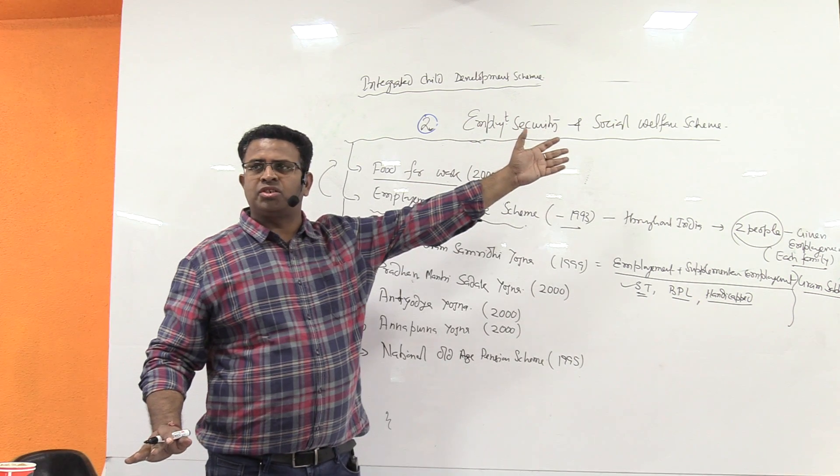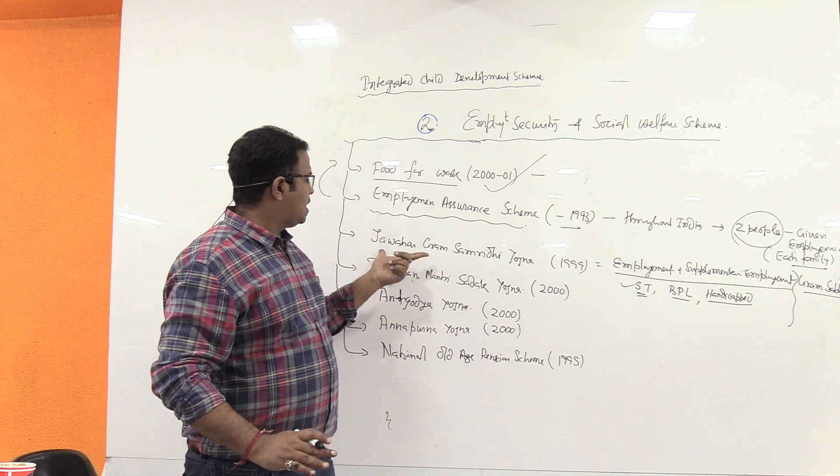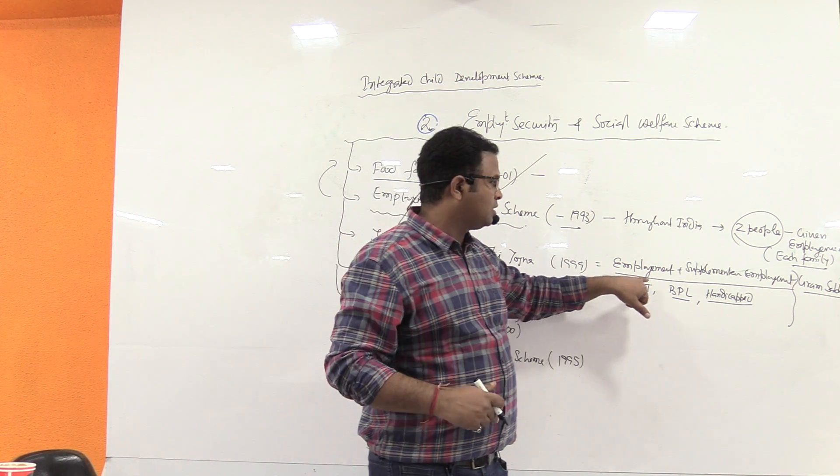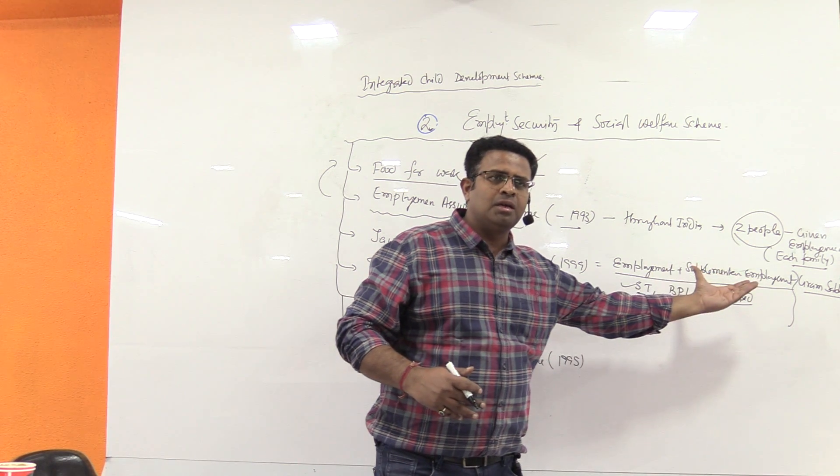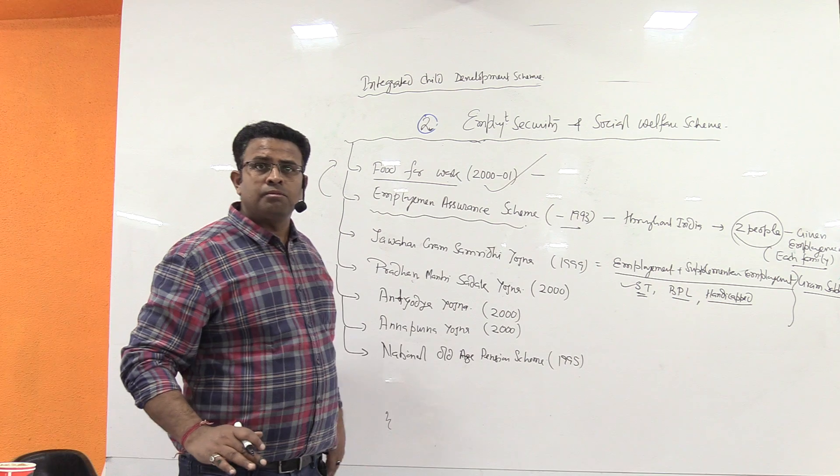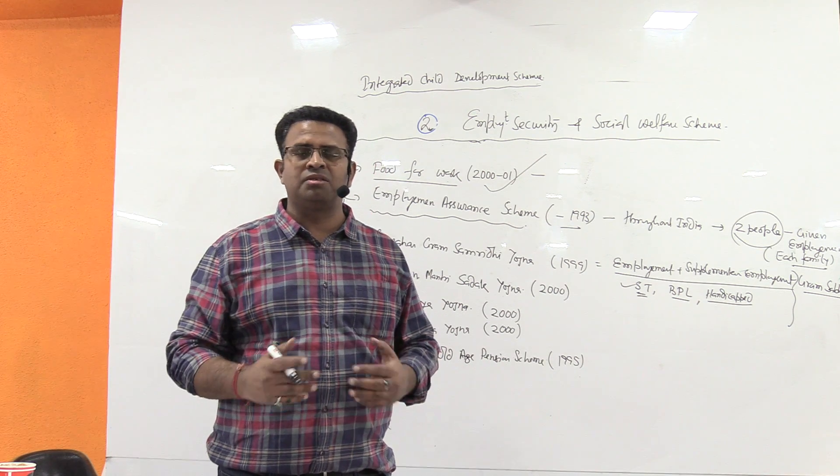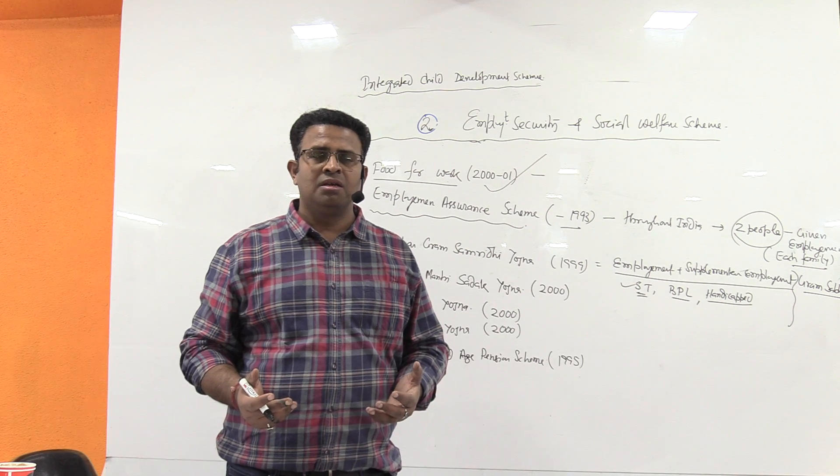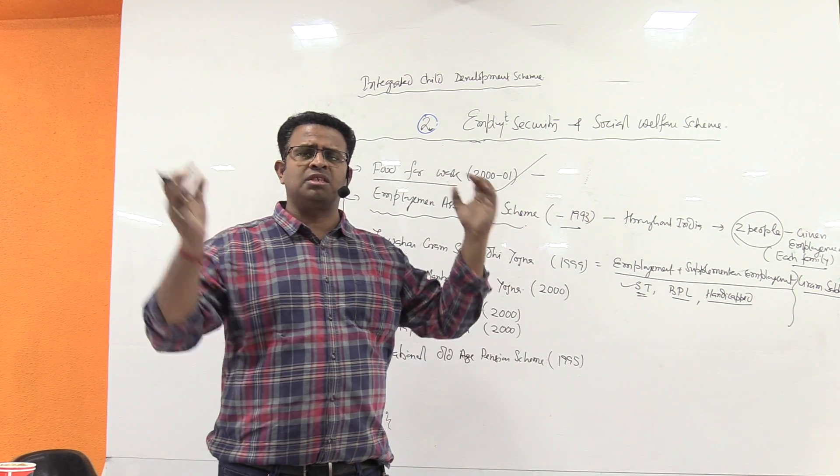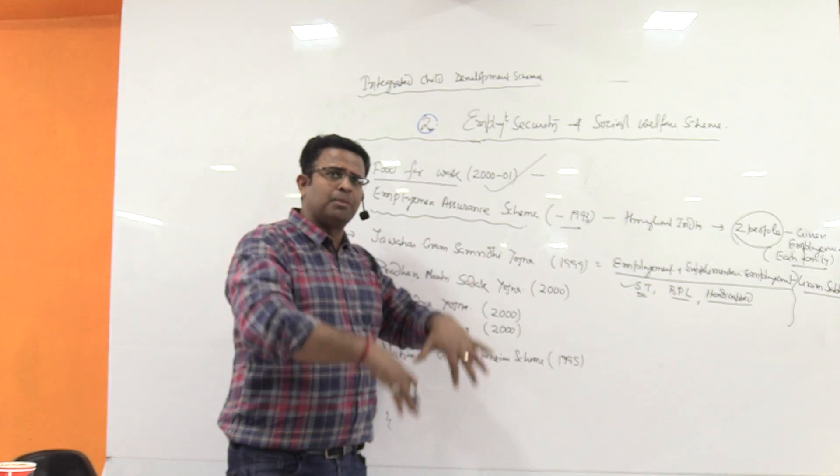Food for work in eight states - wages and food. Employment has reached two people throughout India. Then Jawahar Gram Samriddhi Yojana has come by replacing this one - employment plus supplementary employment. Gram Sabha will be giving it to scheduled tribes, BPL, and handicapped. In village areas during drought, there is a need for extra employment - plant trees, make ponds, they will involve the people, and that will lead to development of village.